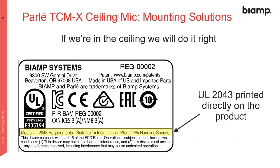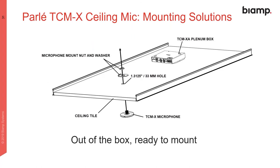The TCMX is certified for plenum and airspaces, suitable for ceiling installation and certified to UL 2043. For installation, you drill a hole in the ceiling tile, mount the plenum control box in the ceiling — all bracketing hardware is included — and a single network cable runs per box to your network or AVB system.